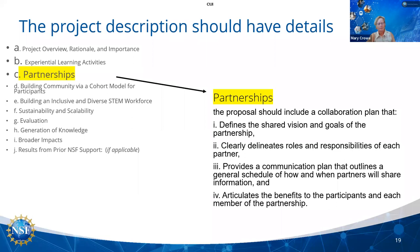The third section of your proposal is the references cited section. This is a PDF document that you're going to upload into the application package. Any literature cited should specifically relate to the motivation or design of the proposed project. The references cited should only include the references you've cited within your narrative — do not include references that are not cited within your proposal.